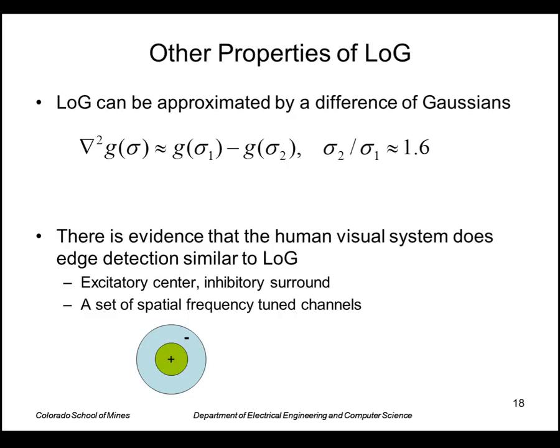There's also evidence that the human visual system does edge detection similar to this. There's evidence for cells in the visual cortex that are sensitive to light in an innermost portion like this and are inhibited by light outside that visual angle. And there's also cells of different sizes from small to large with these larger and smaller fields like that. So very much similar to Laplacian of a Gaussian in the scale space.